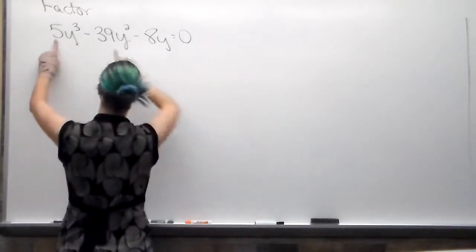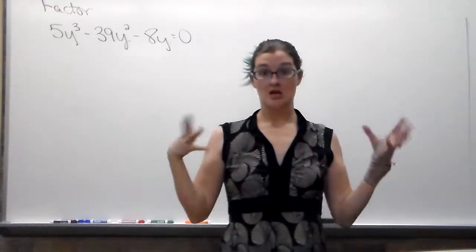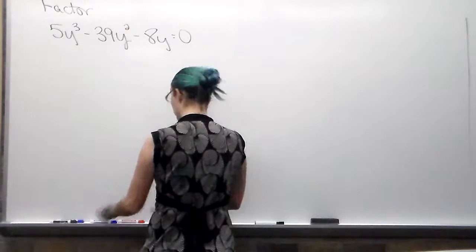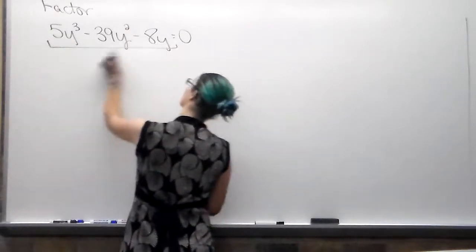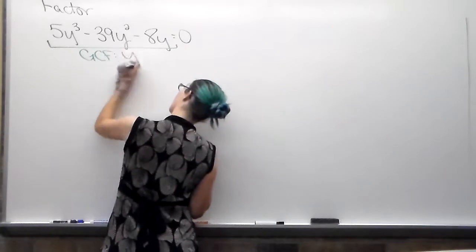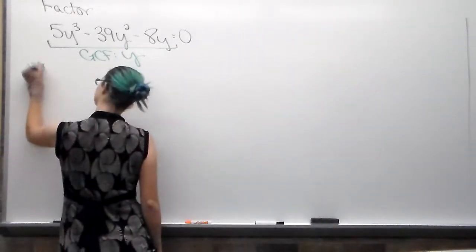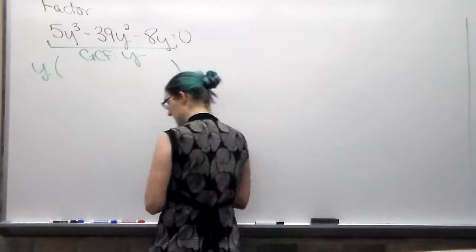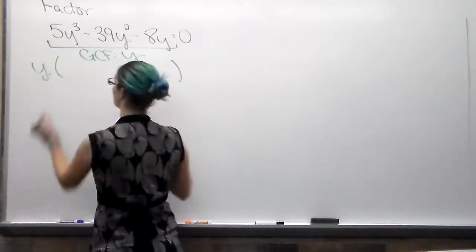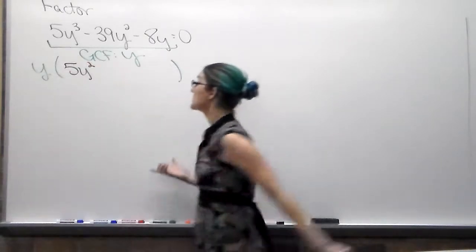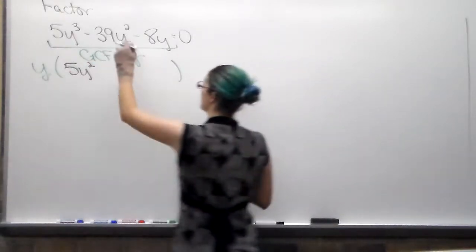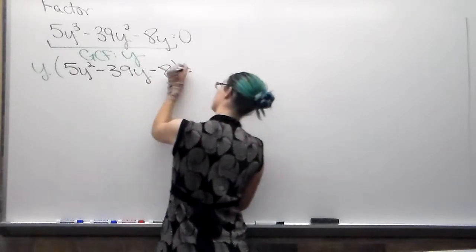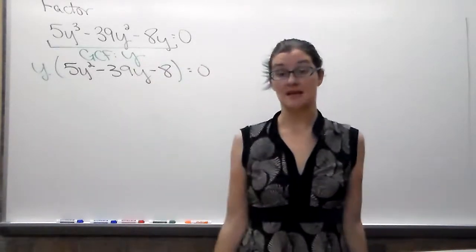So I'm going to look here, 5, 39, and 8, they have no common factors. So I know I don't have a number. But Y cubed, Y squared, and Y, I have a GCF of a Y. So I'm going to take that out. And then I'm going to write everything that would be left over inside the parentheses. So 5Y³ divided by Y is 5Y², 39Y² divided by Y is 39Y, negative 8Y divided by Y is -8. Okay, so the first thing I did was I factored out the GCF.